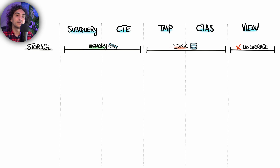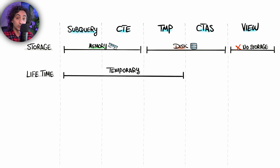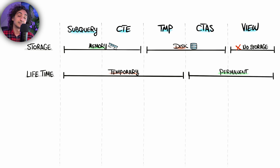Talking about lifetime — how long the object can live or persist in the database — subqueries, CTEs, and temporary tables all live a short time, so all of them are temporary. But if you are talking about creating objects using CTAS and views, those two are going to be permanent, meaning they live in the database as long as you don't drop them.